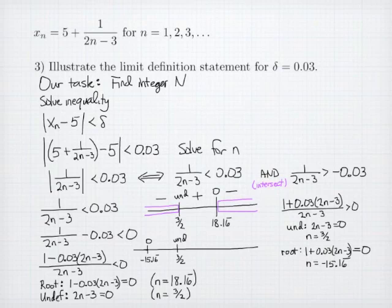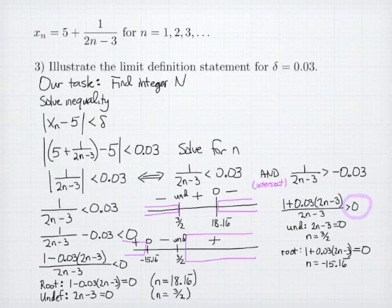This time, when I test the values by picking points, far to the right, I get positive. In the middle, I get negative. And far to the left, I get positive again. For this inequality, I was solving for positive numbers. And so my inequality is everything down to 3 halves, and everything after negative 15 and a sixth to the left.